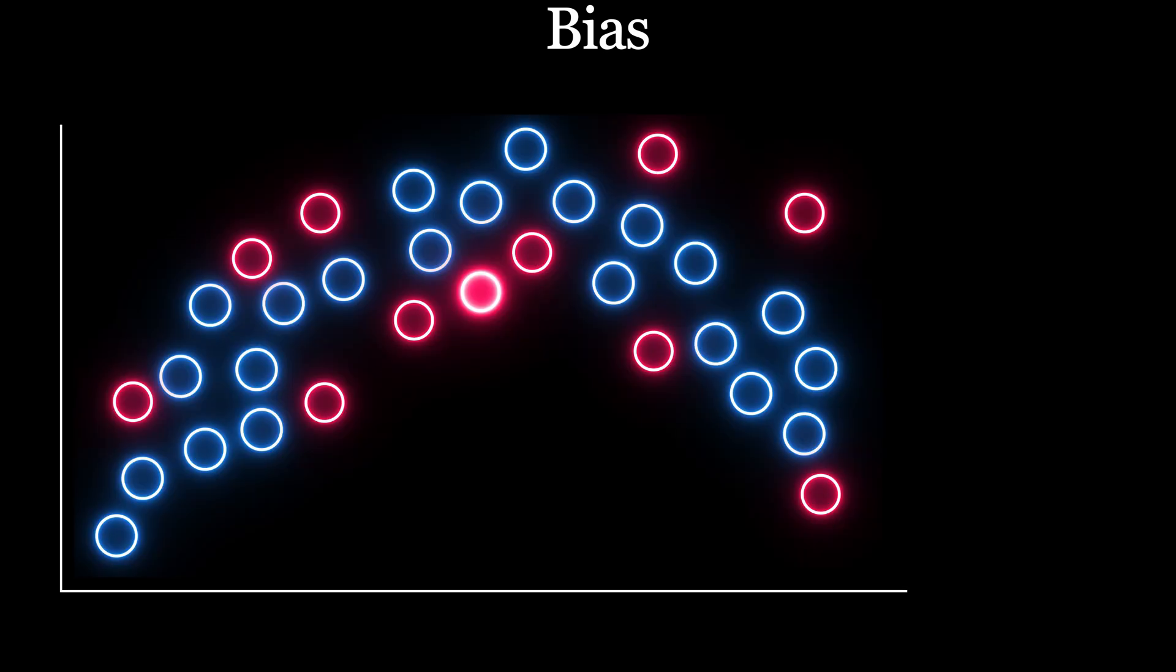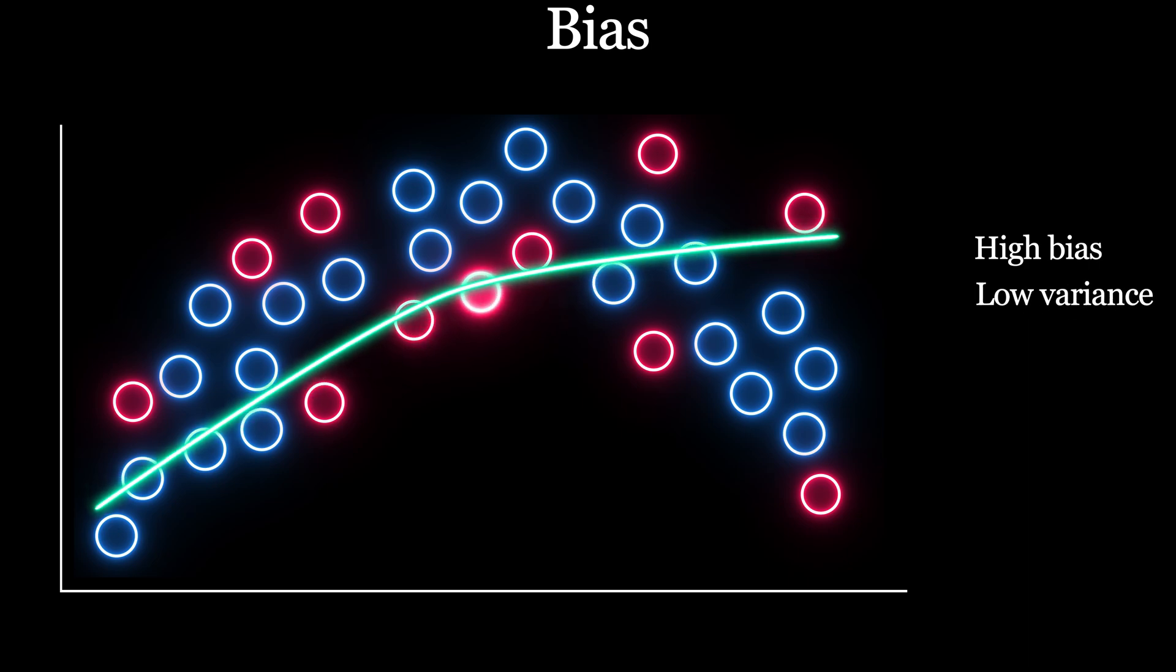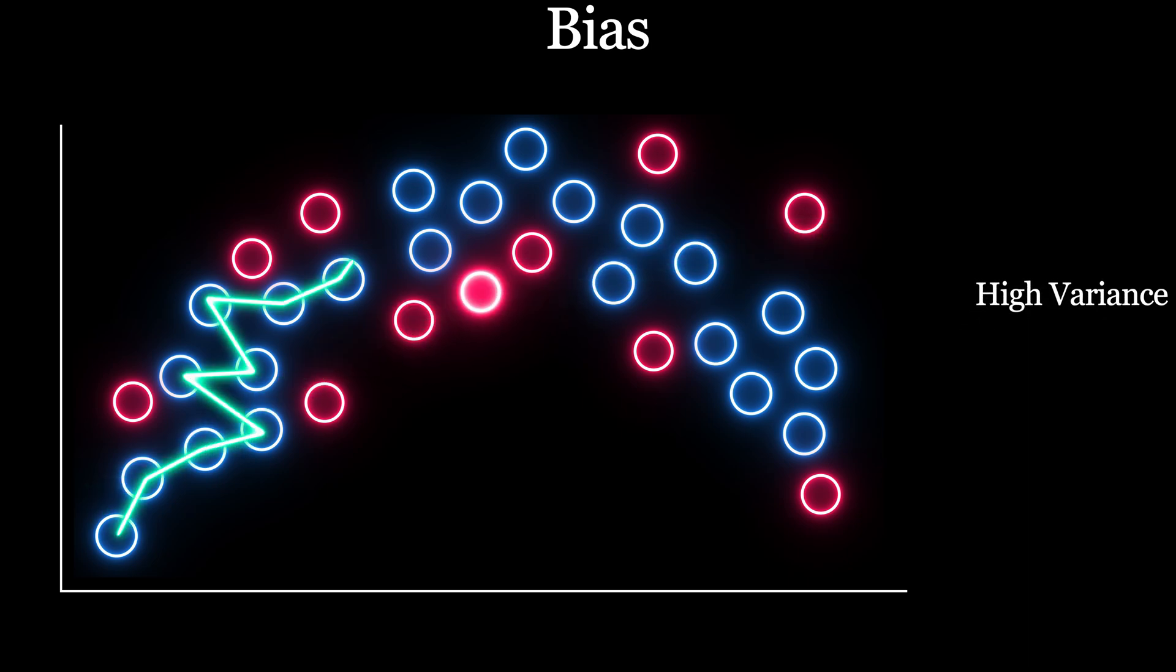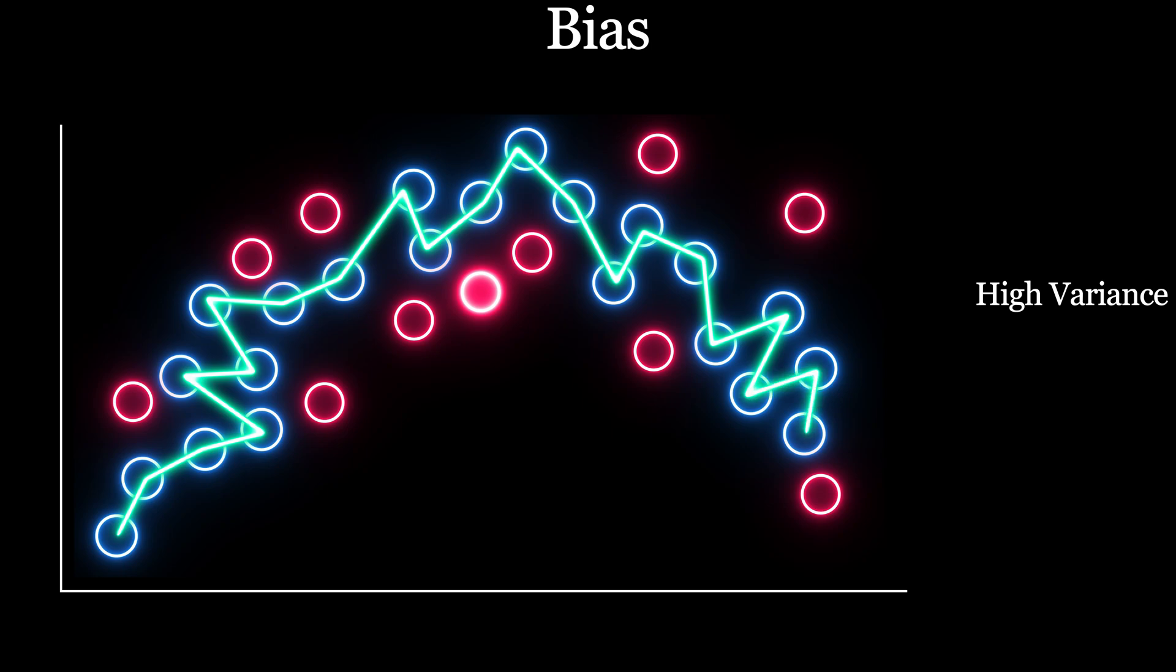You may have noticed that in case of high bias, the model tries to approximate the target function which is very similar to a model with low variance. And when a model has high variance, it tries to approximate the target function in a case similar to very low bias.